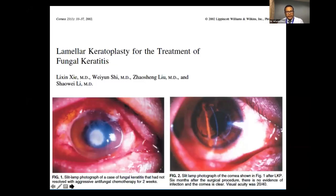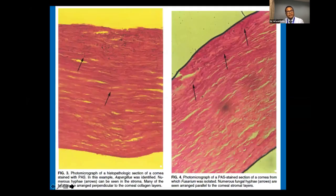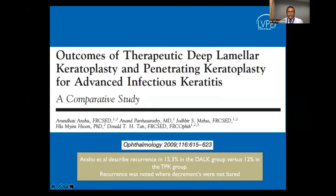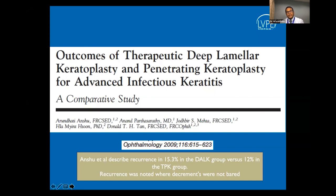A large study from China found that of 55 eyes, 51 resolved with lamellar surgery alone. Histopathology of the buttons showed fungal hyphae aligned parallel to the corneal stroma. A study from Singapore found about 15% recurrence rate in advanced infectious keratitis cases including fungus, bacteria, and Acanthamoeba. Recurrences were typically in cases where Descemet's membrane was not completely bared, leaving lamellae where organisms may have remained.